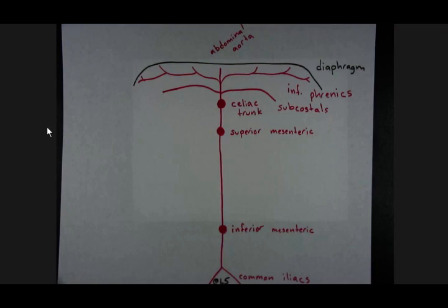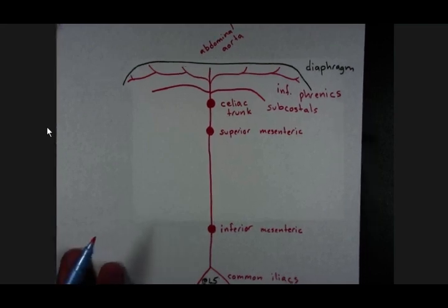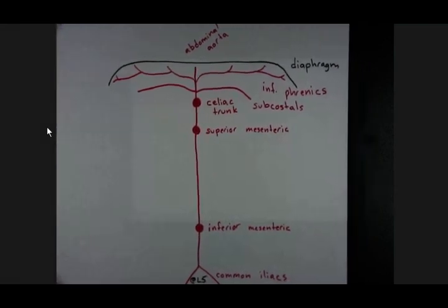These three dots represent unpaired branches of the abdominal aorta and they are going to be the primary blood supply to the viscera of the abdominal cavity. We're going to come up with an embryological tip that's going to help us remember which organs these unpaired arteries are going to take blood to.